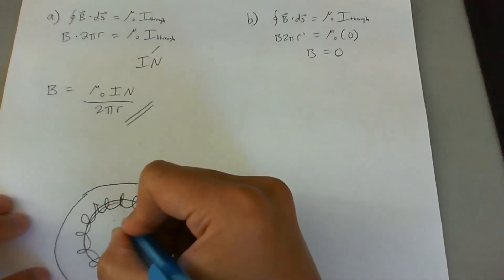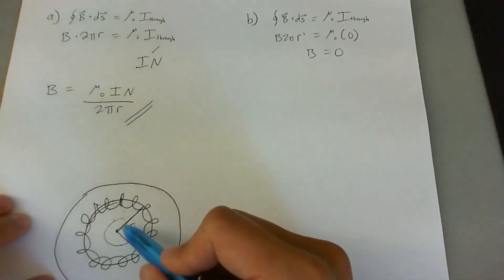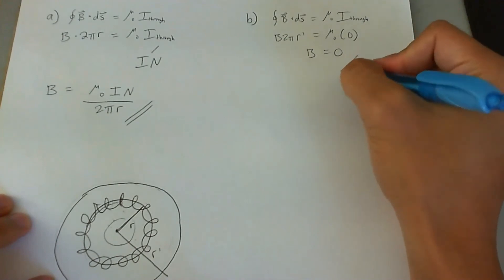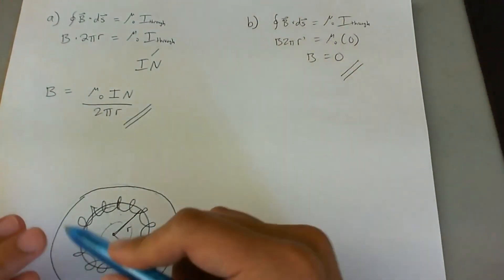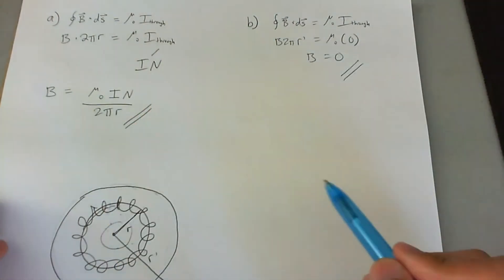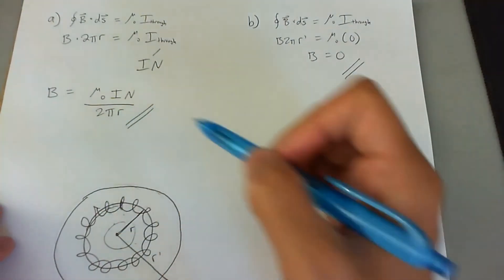Now with the smaller radius, it's kind of easy. There's no current inside the loop, so the B field is still going to be zero. So outside the toroid, no matter which direction you go, B field is going to be zero, but inside the B field is going to be based on the radius of the toroid.